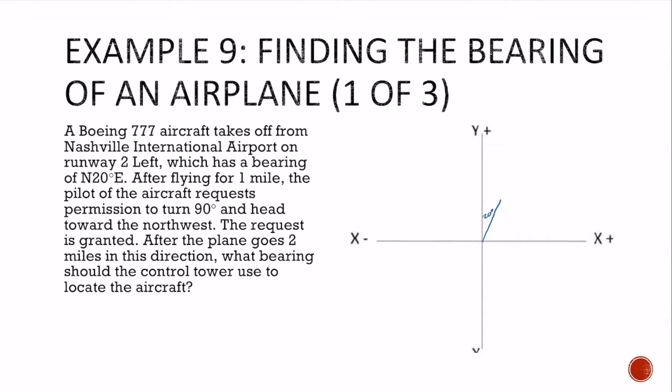After flying 1 mile, okay, it requests permission to turn 90 degrees and then goes 2 miles in this direction. What bearing will the control tower use to locate the aircraft?